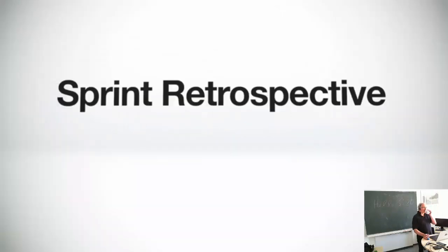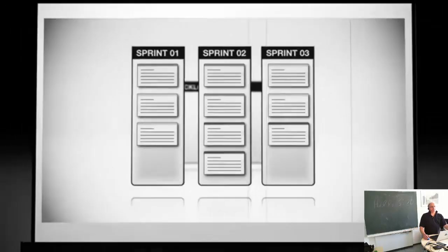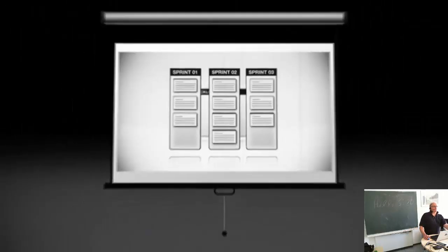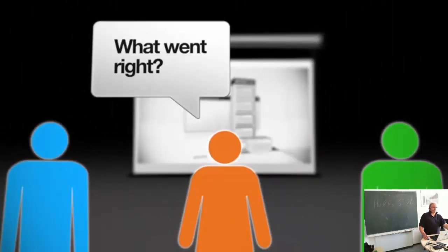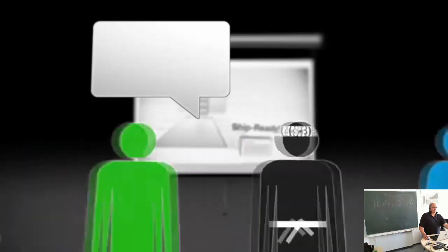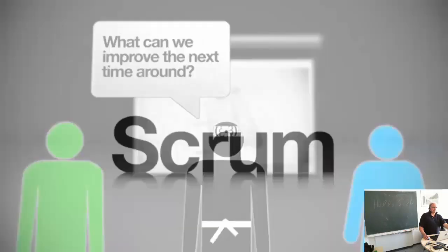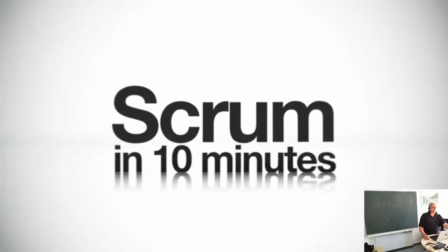Finally, as each sprint comes to a finish, it's important to have a sprint retrospective meeting where the team can reflect on what went right and areas of improvement. After all, Scrum is a flexible, agile development method that needs constant improving and tweaking for every team. So there you have it — Scrum in under 10 minutes. You now know all the essential concepts to start implementing Scrum inside of your organization.